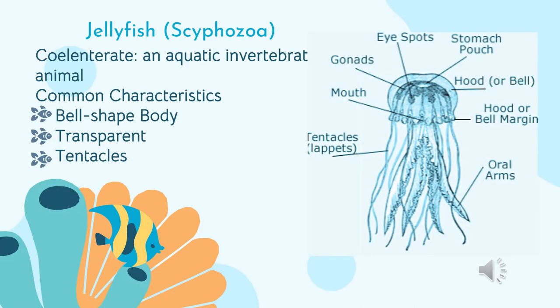Now we'll be talking about jellyfish in the class Scyphozoa. In this class, most jellyfish are actually made up of 99% water. Jellyfish are coelenterates, which are aquatic invertebrate animals — aquatic animals that lack a backbone. Common characteristics of coelenterates are that they have a bell-shaped body, like the bubble you usually see above the tentacles. They are usually transparent and they also usually have tentacles, as you can see labeled in the picture.